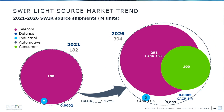To conclude, looking at market trends for SWIR light sources: today the telecom and infrastructure market represents 99% of the market by unit volume. By 2026, all markets for SWIR light sources are expected to increase, including telecom and infrastructure, and the emergence of the consumer market will significantly benefit the SWIR light sources market overall.